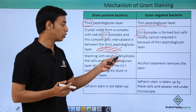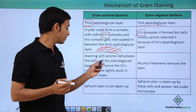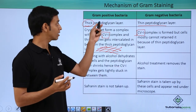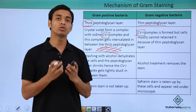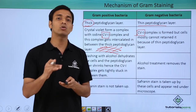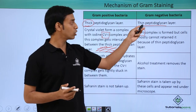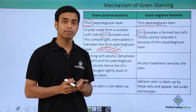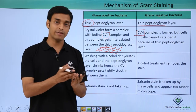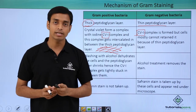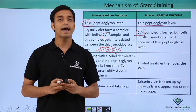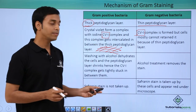During the decolorizing step with alcohol or acetone, the alcohol dehydrates the cell, causing the peptidoglycan layer to shrink. In gram positive bacteria, the CVI complexes get more intercalated and stuck into the cell wall layers. In gram negative bacteria, alcohol also removes the outer lipid bilayer, and the thin peptidoglycan means CVI complexes are removed easily. During counter staining with safranin, gram positive bacteria don't take the safranin stain because spaces are occupied by CVI complexes, so they appear violet or purple. Gram negative bacteria take up safranin and appear light pink.